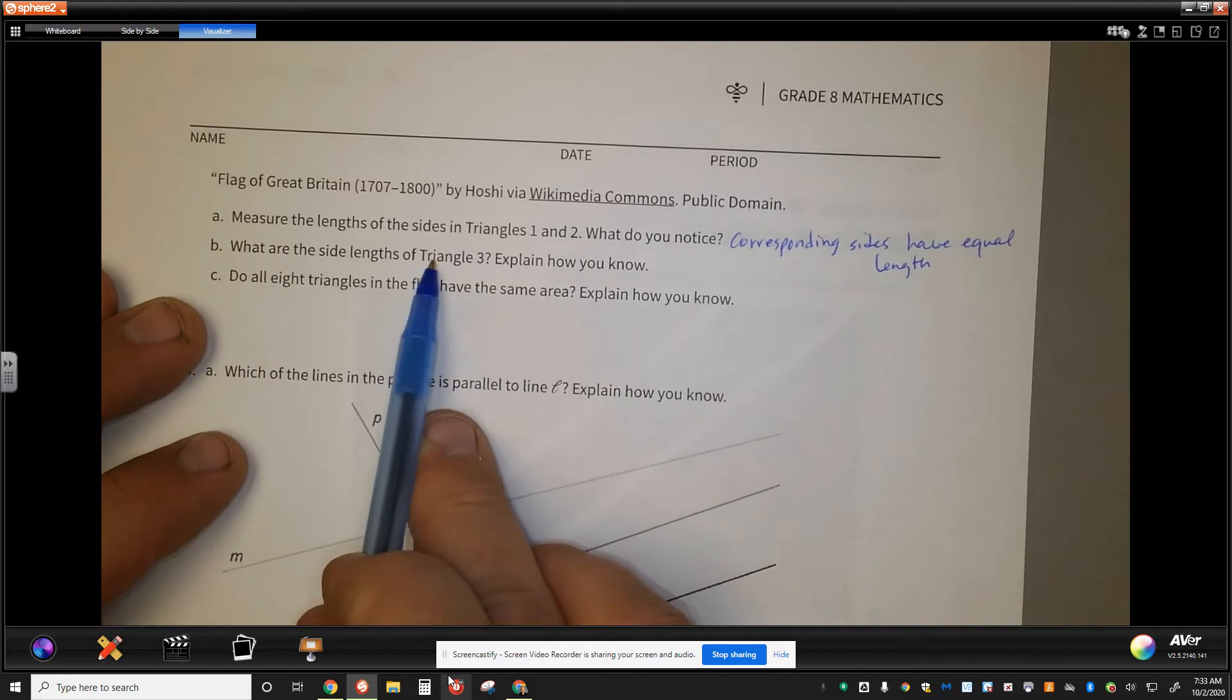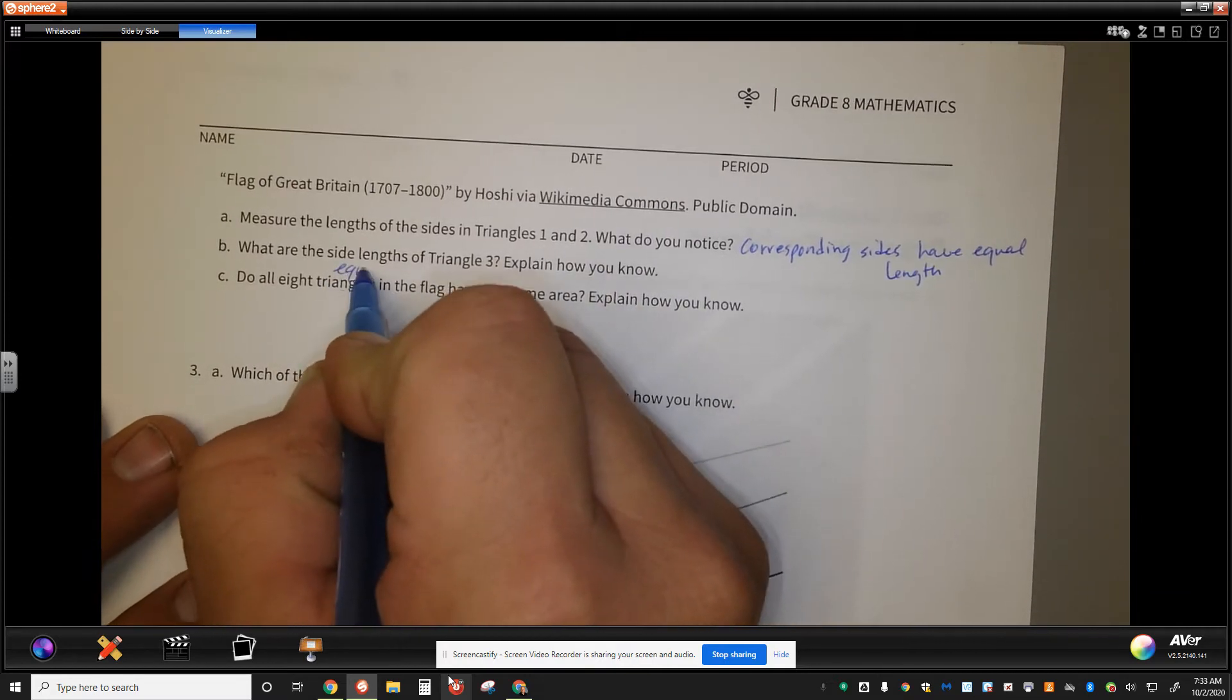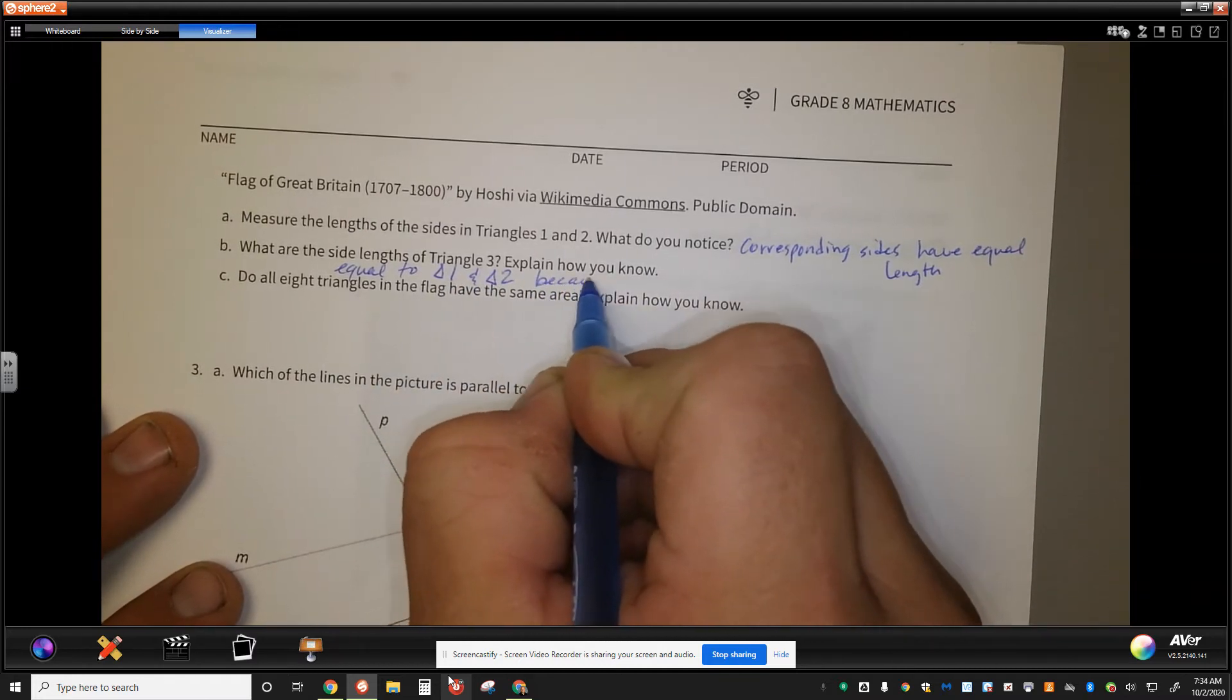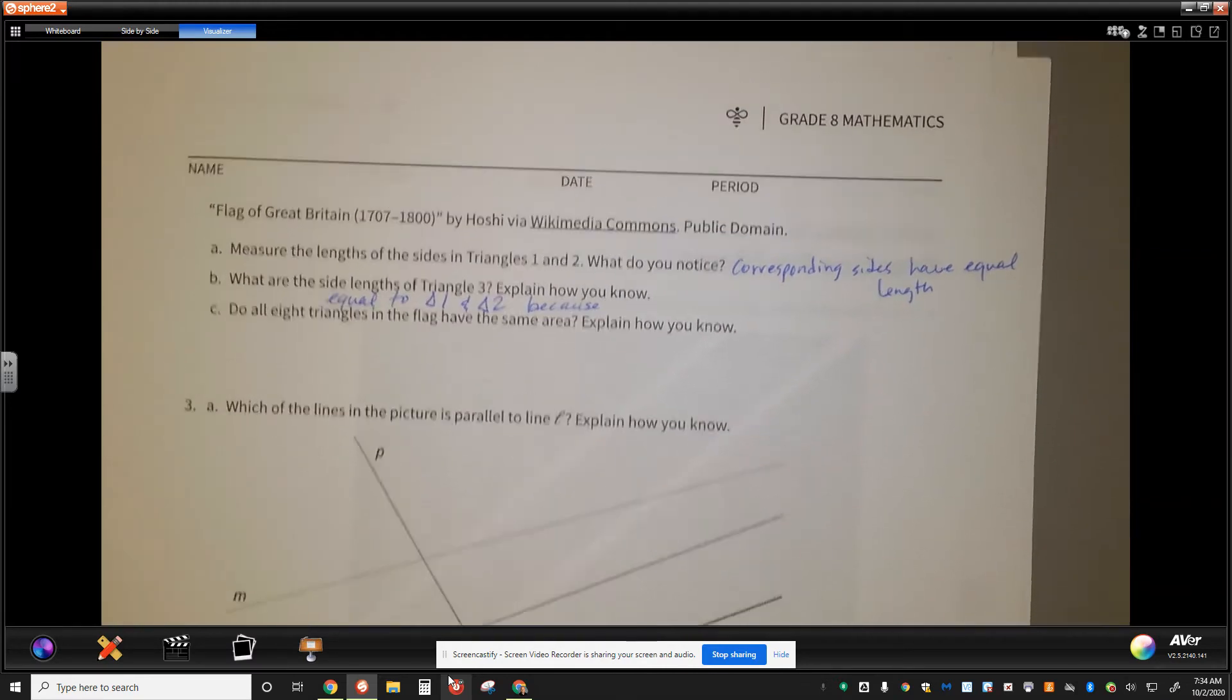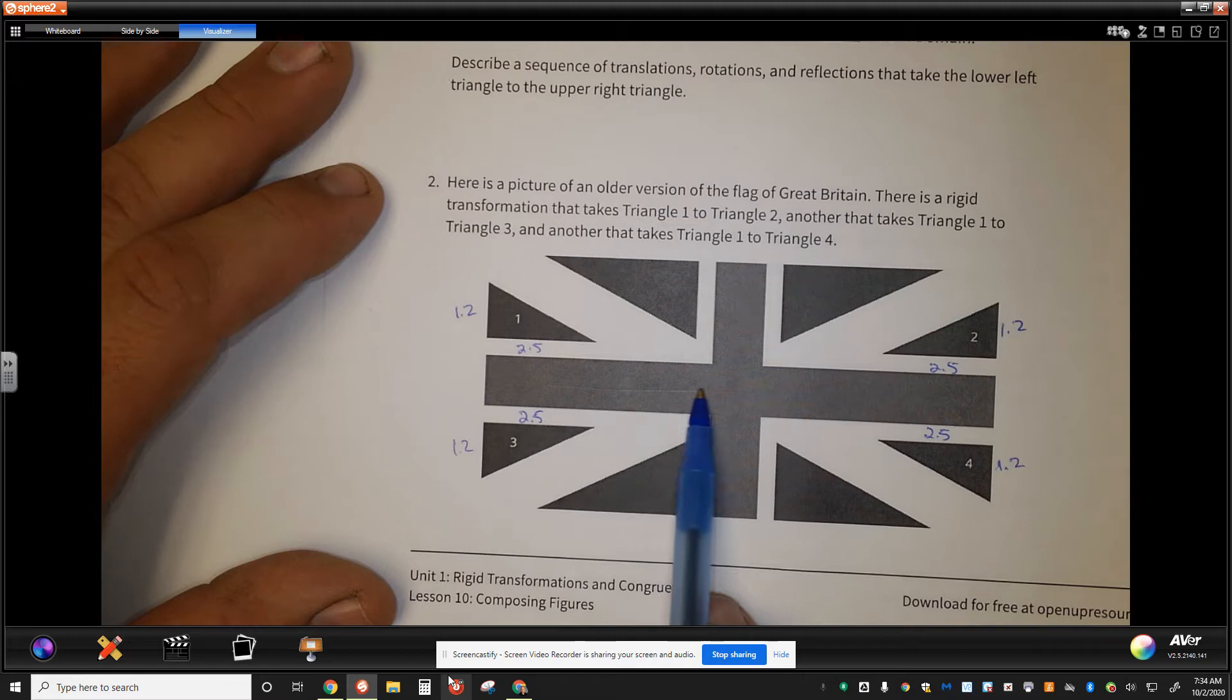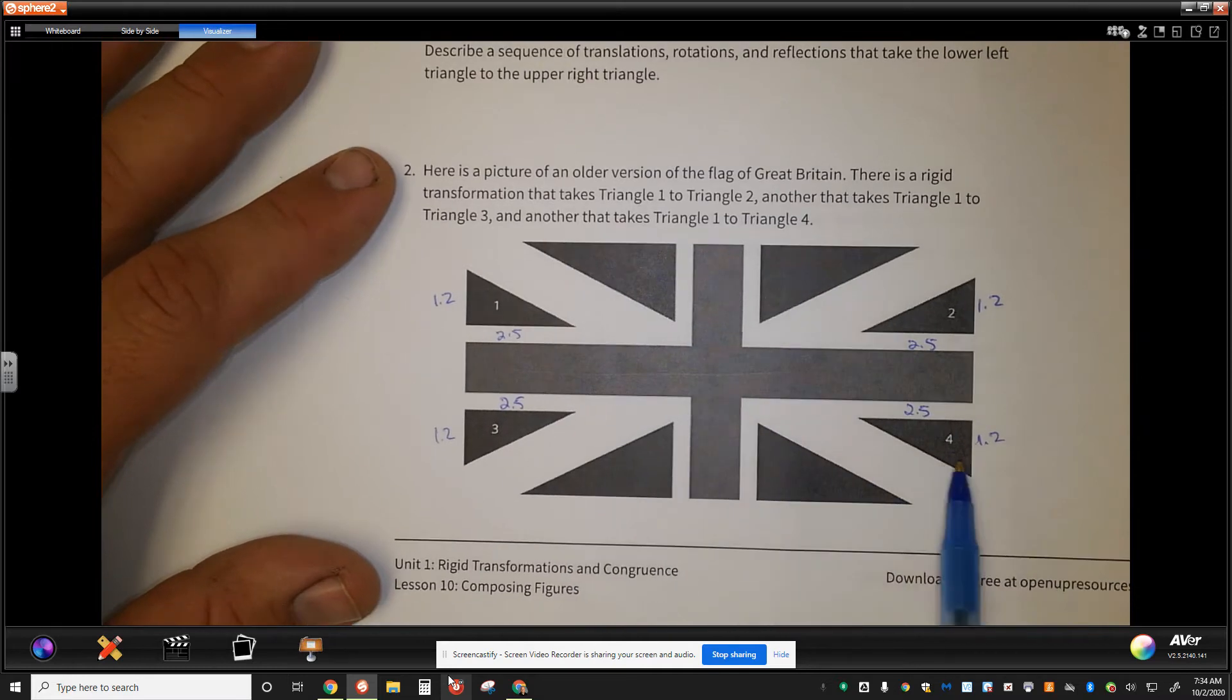It says, what are the side lengths of triangle 3? Explain how you know. Well, they're going to be equal to triangles 1 and triangle 2 because of a reflection. That's our big piece with it. If I can reflect this triangle across a line right here in the middle, I would get triangle 3. I could rotate triangle 1 180 degrees around the center and get triangle 4.